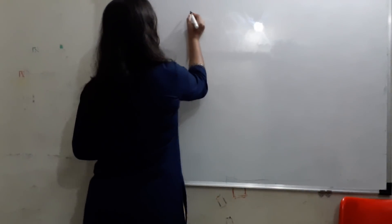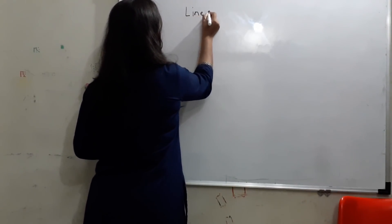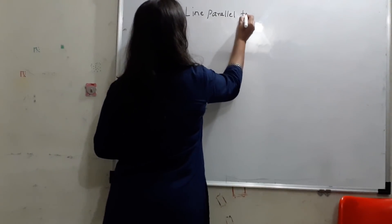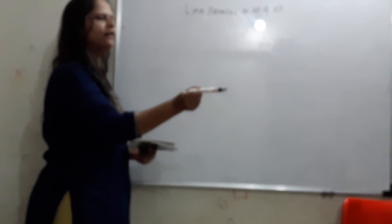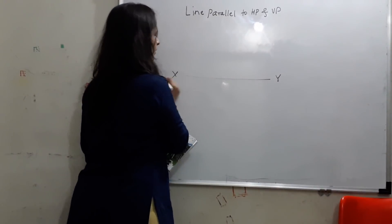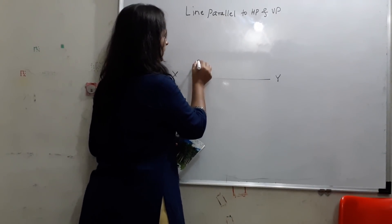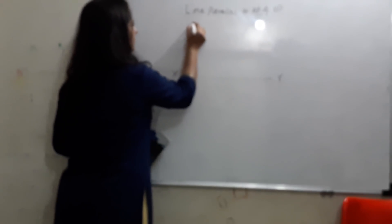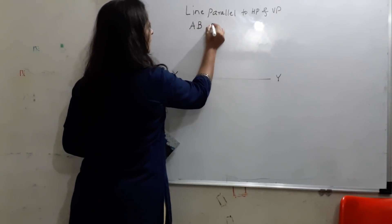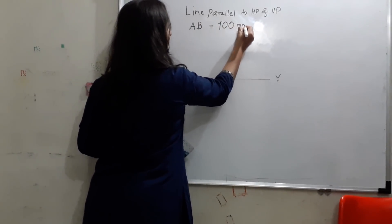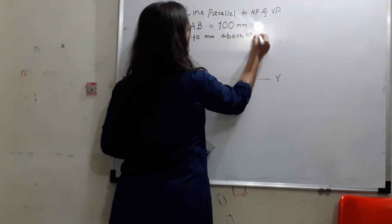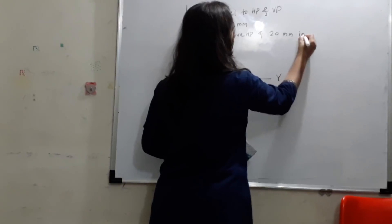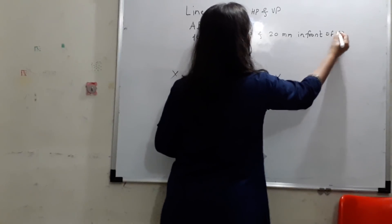This is known as Type 1: line parallel to HP and VP. We have VP and the floor as HP. The condition is where the line is parallel to both HP and VP. Draw the XY line. The data: line AB having length 100mm, 10mm above HP, and 20mm in front of VP.